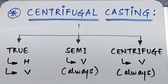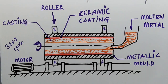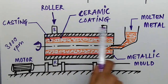Semi-centrifugal casting and centrifuge casting will be covered in the next lectures. In today's lecture we'll only talk about true centrifugal casting and its subtypes. This is our setup for true centrifugal casting for horizontal axis — we have a motor connected to rollers.